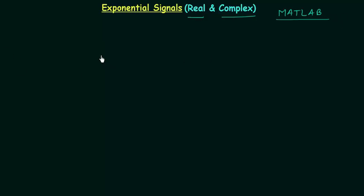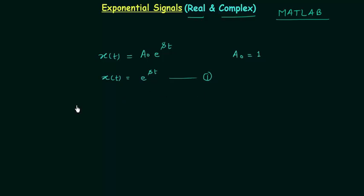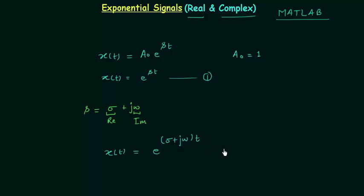Let's take the exponential signal x(t) which is equal to a0 times e raised to power st. For simplicity let's take a0 equal to 1, so we have x(t) equal to e raised to power st — call this equation 1. S is a complex number and it is equal to sigma plus j omega, where sigma is the real part and omega is the imaginary part. So we can write equation 1 as x(t) equal to e raised to power (sigma plus j omega)t.